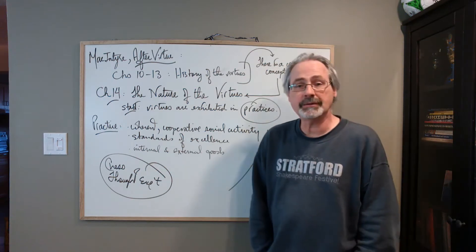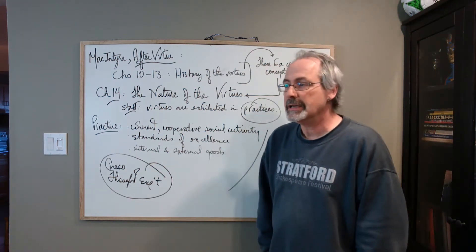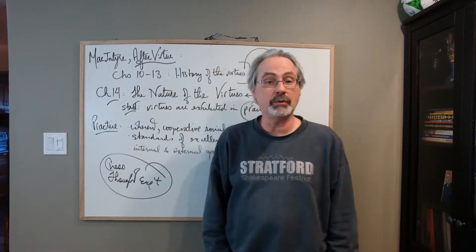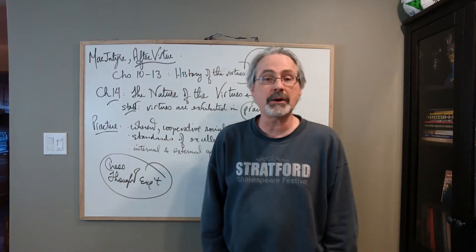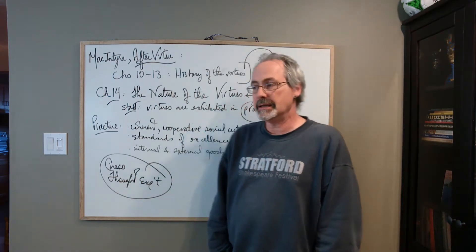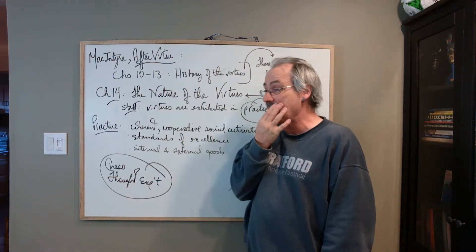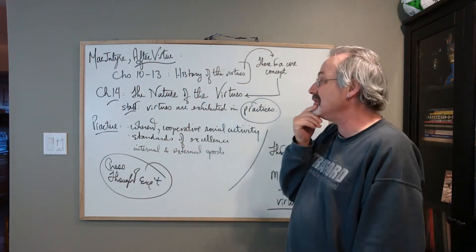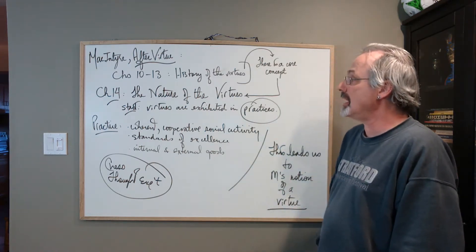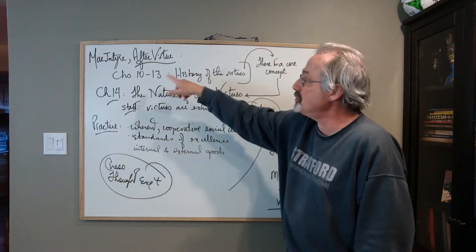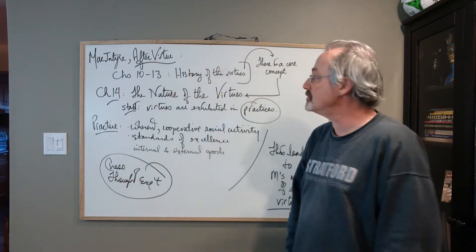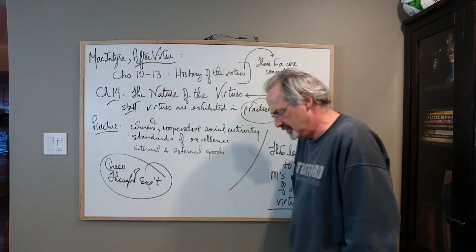Now that we've decided to follow MacIntyre and we reject Nietzsche and we're going to have a look at Aristotle and bring Aristotle back a little bit, or at least embrace a kind of Aristotelianism. If that all goes through, then what does MacIntyre do next? It's not surprising that we're going to get a little bit of a history lesson. After chapter nine, we turn to chapters 10 through 13, which are basically a history of the virtues and what MacIntyre wants to do.